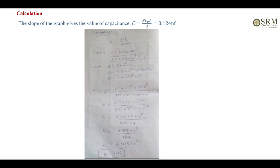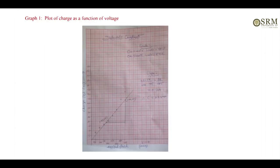After that, draw the graph between Q value and voltage value and find the slope. That equals C value. Put that value in the formula and find the dielectric constant of air. That is nearly equal to 1.